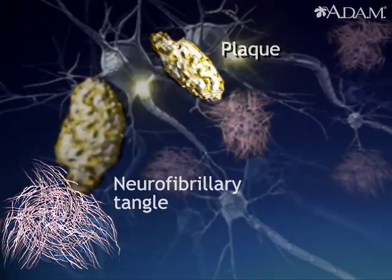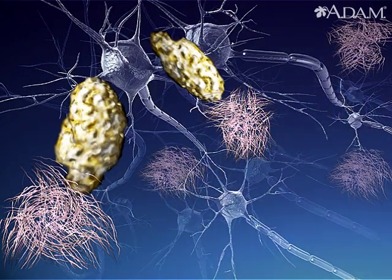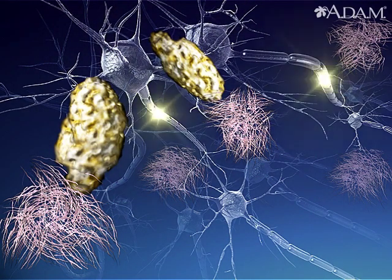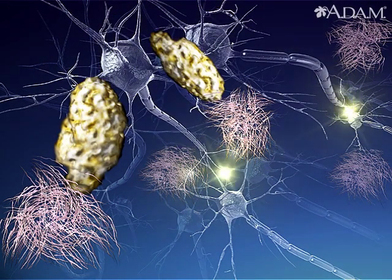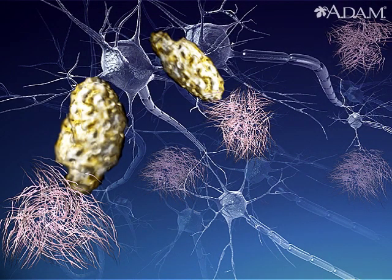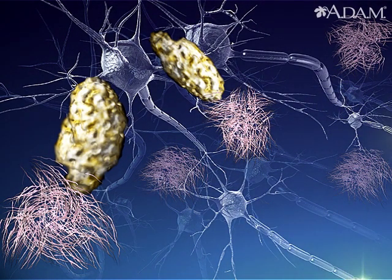These consist of twisted strands of a different protein. Together, the plaque and tangles cause structural and chemical problems. It appears that Alzheimer's disease causes parts of the brain that normally work together to disconnect.